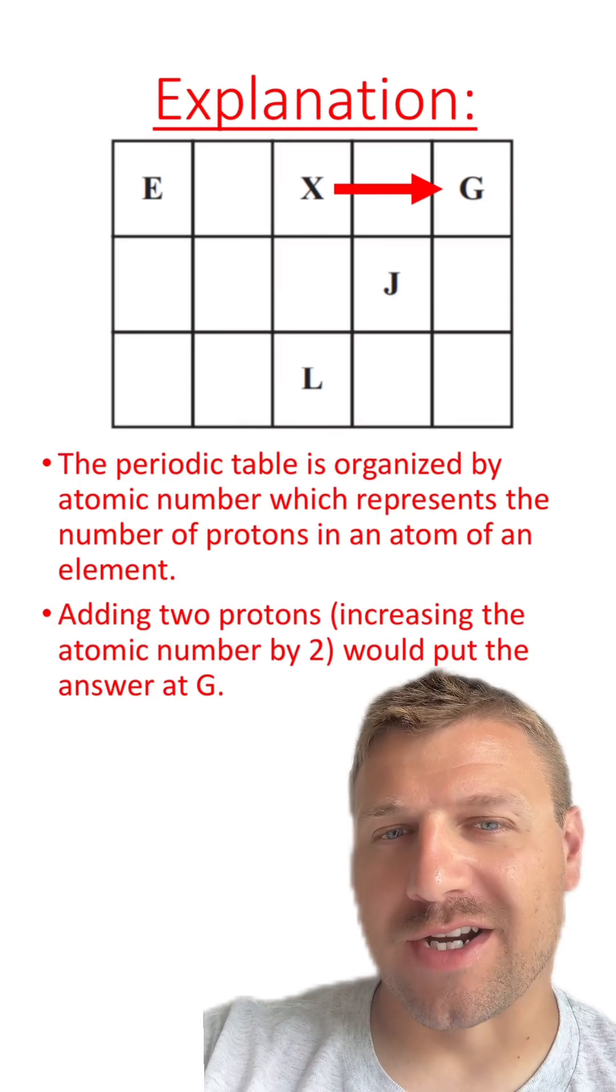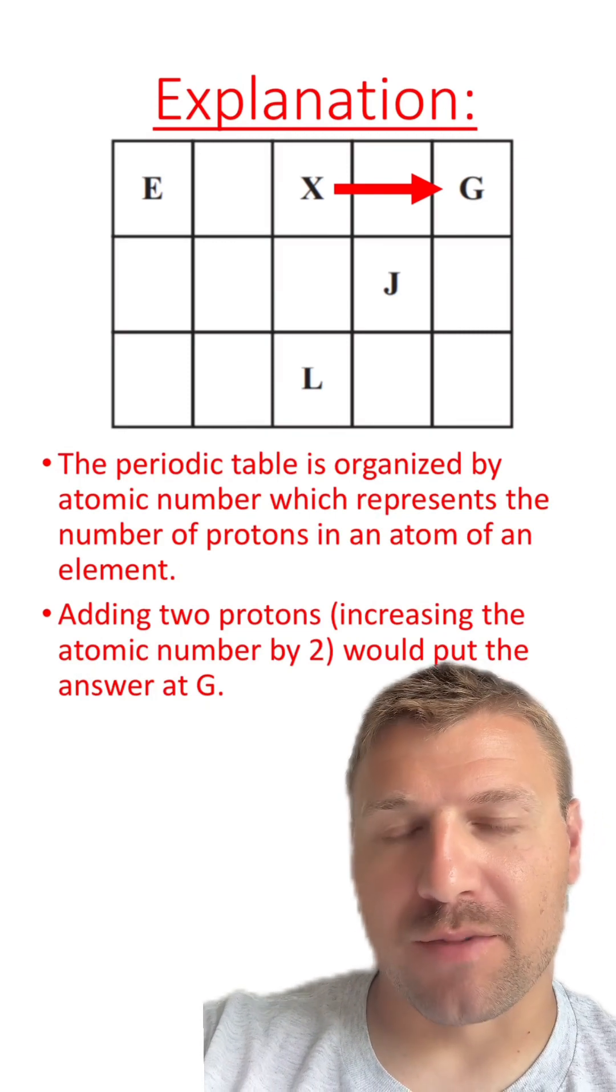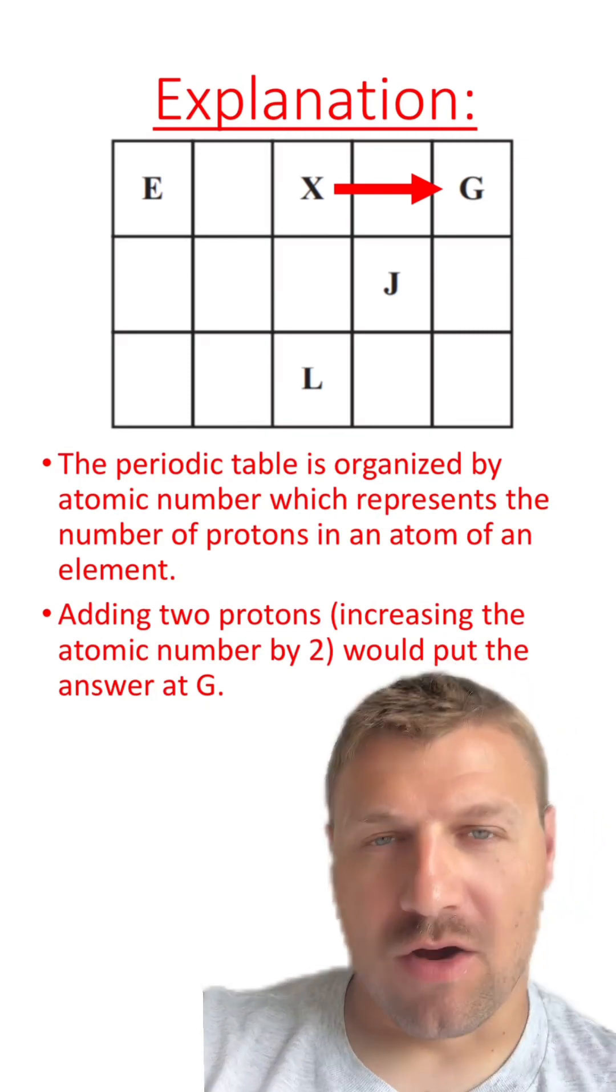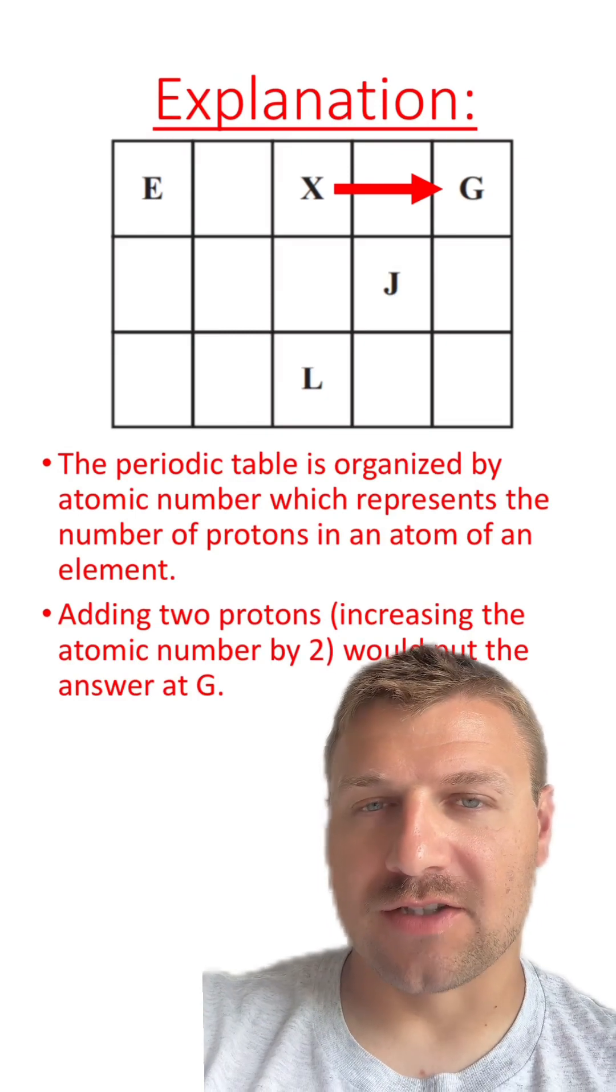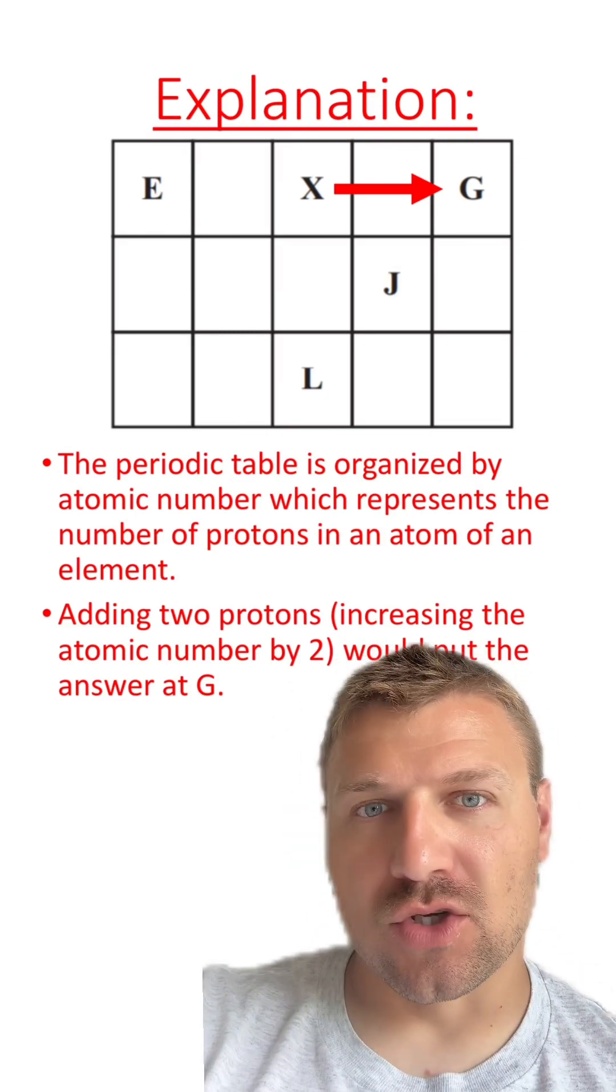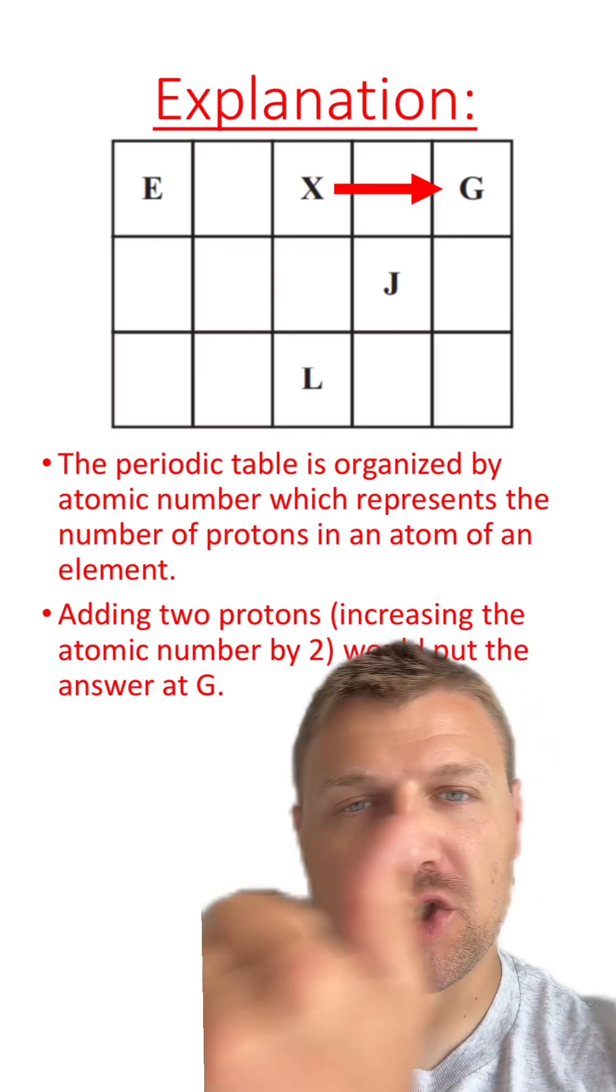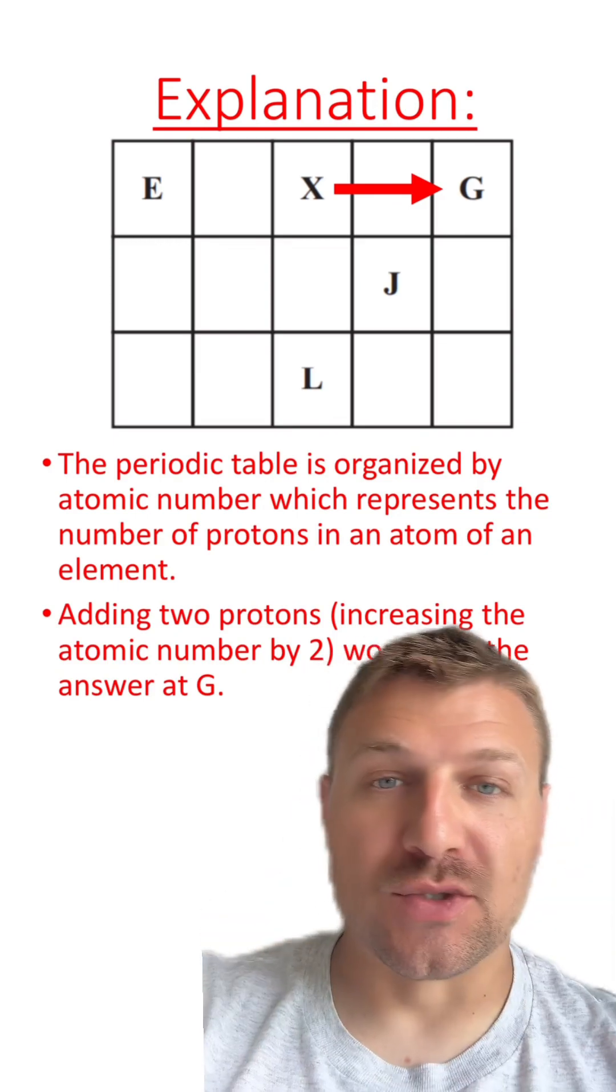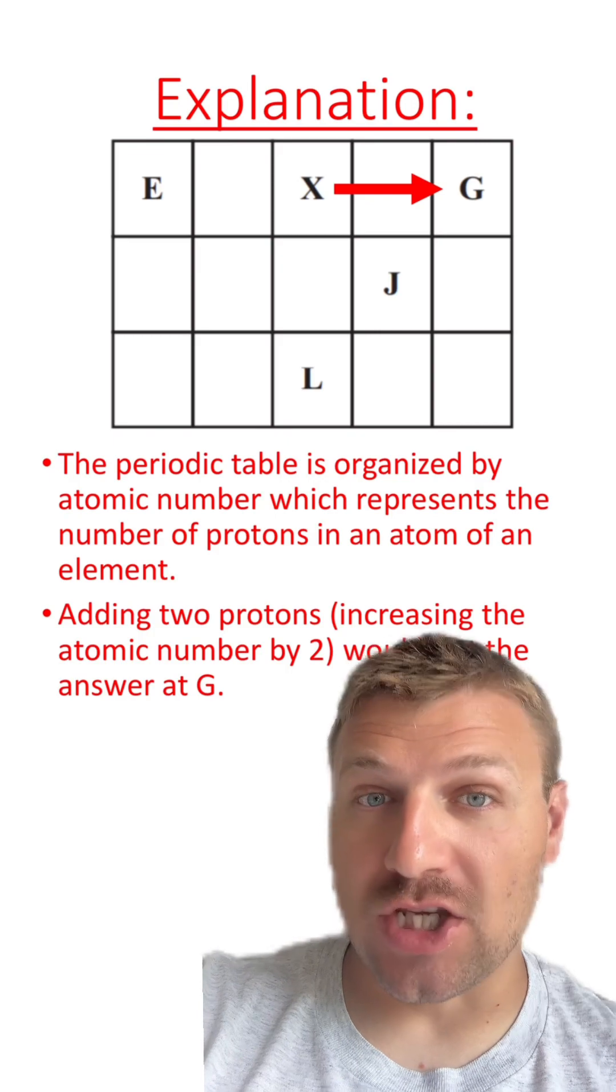Remember that periodic tables are organized by the atomic number or the number of protons for an atom. And on a periodic table, the increasing atomic number goes from left to right. So adding two protons to the atomic number would shift that element to the right two spaces, which means that G would be the element.